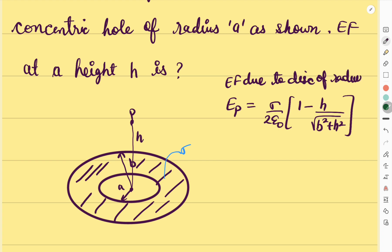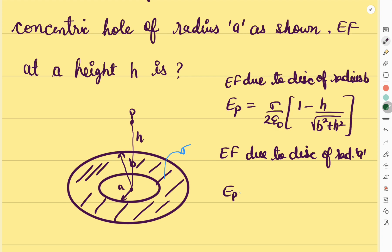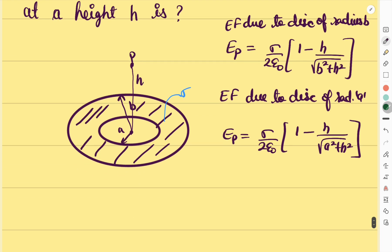This gives the electric field due to the entire disk of radius b. We also need the electric field due to a disk of radius a at point P, which is E = σ/(2ε₀) · [1 − h/√(a² + h²)]. However, the inner disk of radius a is the hole — there is no charge there — so that contribution must be subtracted.